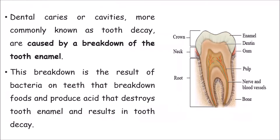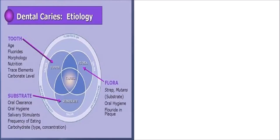If you look at this picture, you will see the crown portion, or the portion which is visible in your oral cavity. The white portion of your teeth that is visible is called the crown, and what is embedded in your bone is called the root. This breakdown of the outer surface of your tooth, which is the enamel, and the bacteria which fall on the enamel actually causes the dental caries.